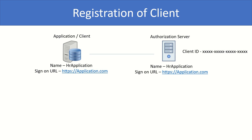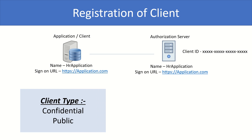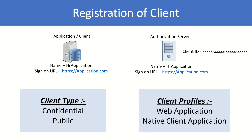In OAuth, there are basically two client types: confidential and public. The difference is that when your application behaves as a confidential client, you use one additional attribute when sending every request to the authorization server — apart from the client ID — and that is the client secret. If you've configured any OAuth application before, you'll know that every service provider allows you to create two types of applications: confidential and public. When using a confidential client type, you must use both client ID and client secret.